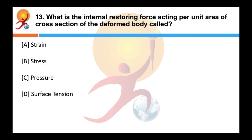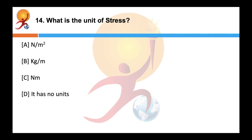What is the internal restoring force acting per unit area of cross section of the deformed body called as? Correct answer is stress. Stress is given by force upon area. The unit of stress is newton per meter square in SI units, and dyne per centimeter square in CGS units.